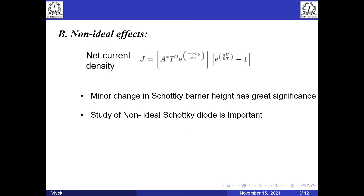We have seen the formula before for current density. One important thing to note is that the Schottky barrier height φ_B appears in the exponential, and hence any minor change from the ideal value will manifest in the current-voltage equation exponentially and will have a significant impact on the current — which makes the Schottky barrier height a very important factor for the Schottky diode.